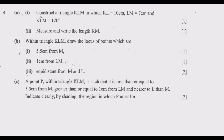Let us look at question 4A from construction. This question always comes mostly in the formal section. If you understand the steps and principles behind this question, it is a giveaway question. The task is: construct a triangle KLM in which KL is equal to 10 cm, LM is equal to 7 cm, and angle KLM is equal to 120 degrees. Then measure and write the length of KM.